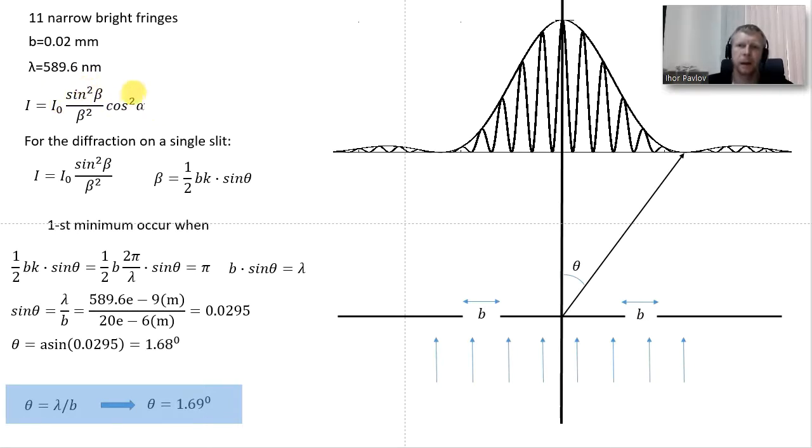One function is modulating the other. From our information which says 11 narrow bright fringes, it means that we have the first central maximum and then we have five maxima from both left and right side, and the sixth one coincides with the diffraction minimum. From here we can determine the theta angle since we know the slit width.